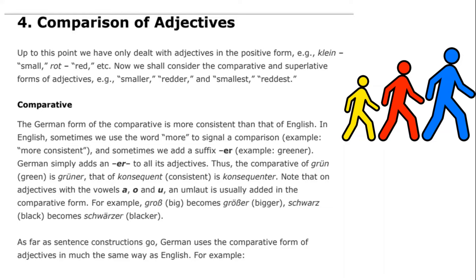In German, you simply add "-er" to all adjectives to form the comparative — the comparative of "grün" becomes "grüner." Note that on adjectives with the vowels a, o, and u, an umlaut is usually added in the comparative form. For example, "groß" (big) becomes "größer" (bigger), and "schwarz" (black) becomes "schwärzer" (blacker).